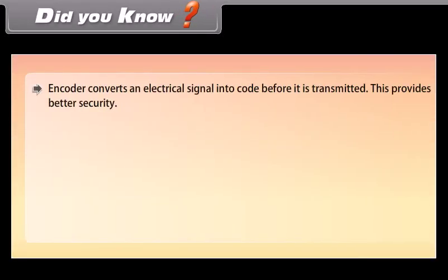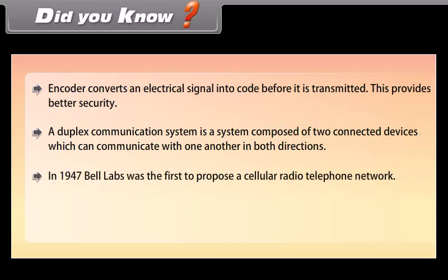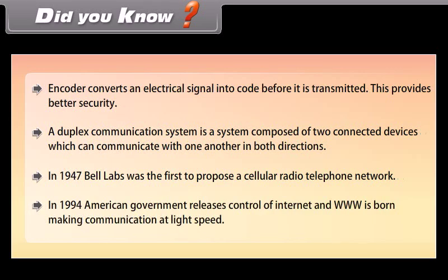Did you know: an encoder converts an electric signal into code before it is transmitted, providing better security. A duplex communication system is composed of two connected devices which can communicate with one another in both directions. In 1947, Bell Labs was the first to propose a cellular radio telephone network. In 1994, the American government released control of the internet, and the World Wide Web was born, making communication at light speed.